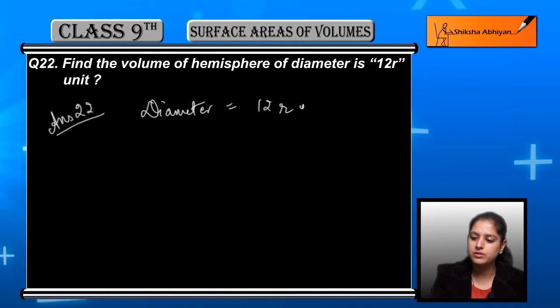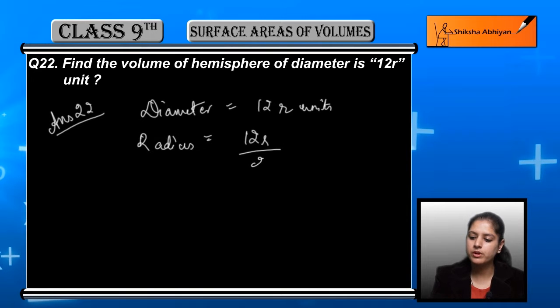12r units. So radius will be equal to 12r upon 2, which is equal to